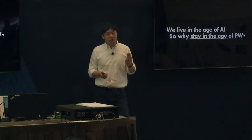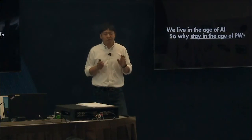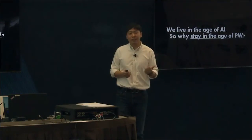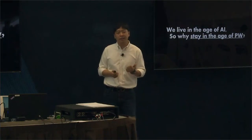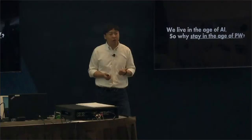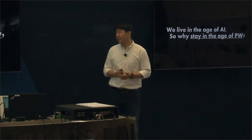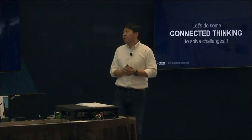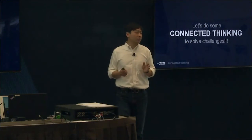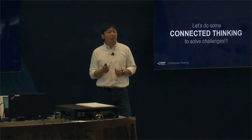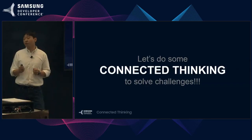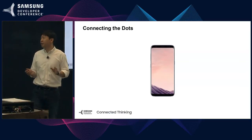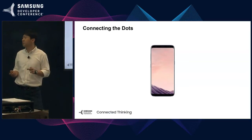So far I've mentioned four different challenges in terms of identity and authentication management. The first was with the identity of a person — the physical identity. The second was with security and privacy. The third was IoT, and the last one was user experience. So let's try to do some connected thinking to solve these challenges. At Samsung, we actually have a lot of technology components that could potentially address these problems. Let's try to connect the dots and see how different technologies can be combined together.